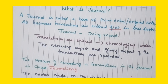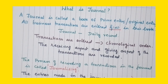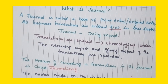The word journal means daily record. All transactions in the book are recorded in the order in which they occur — they will be entered in the chronological order, that is, date-wise. So the record is maintained according to the month and date order.